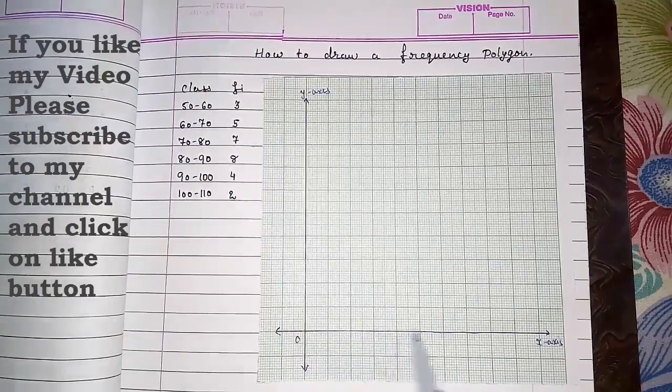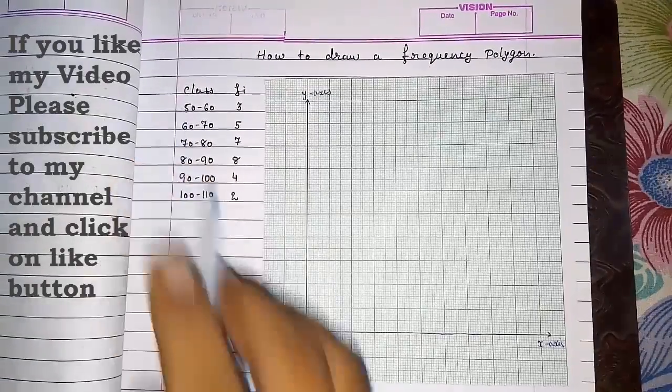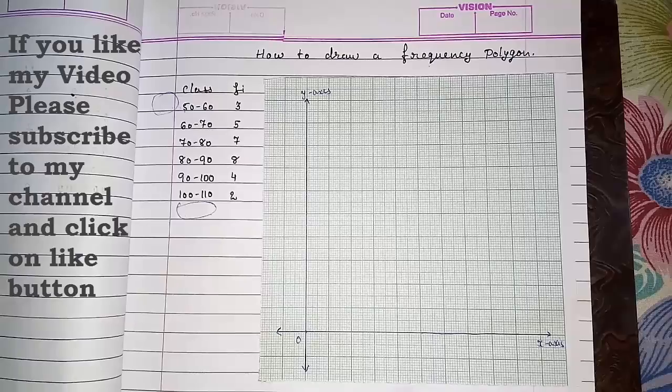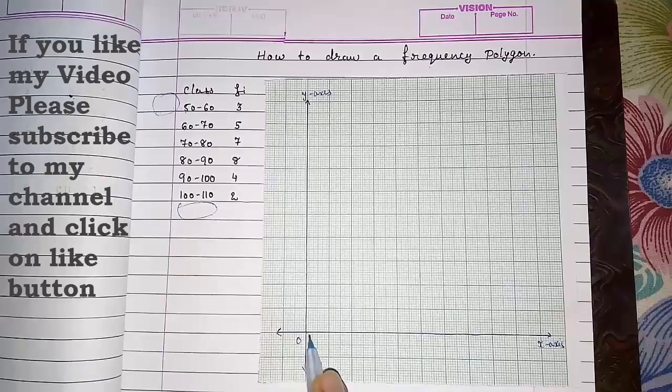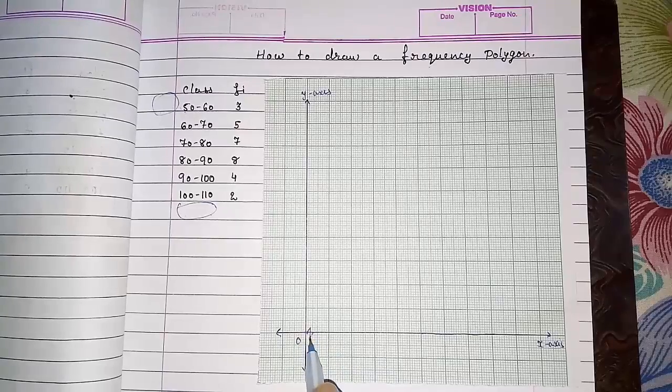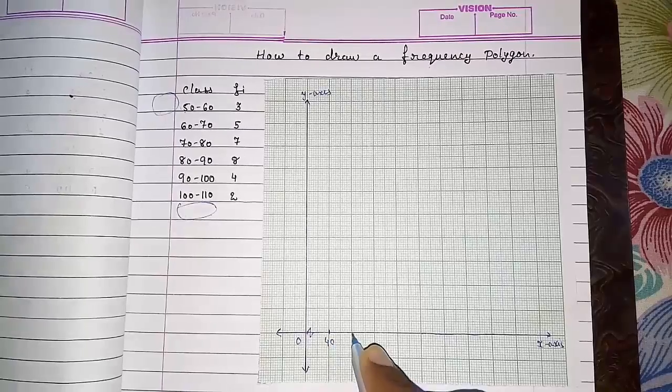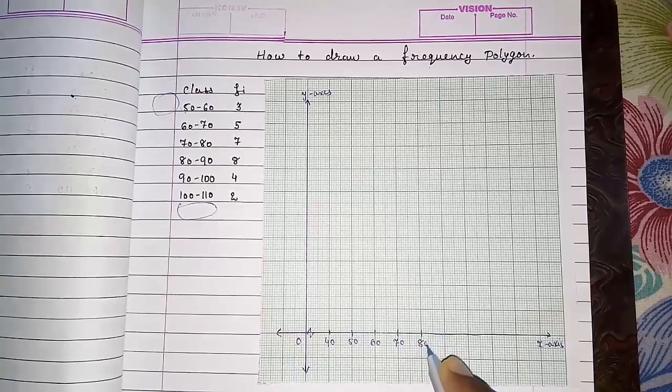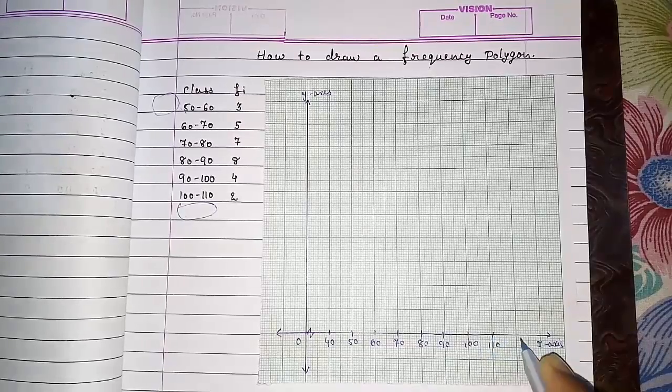Now one by one we have to represent this class here, but for frequency polygon first we have to extend one class in the front section and after this also we have to add one class. Why we are adding that I will tell you later. So here 50 to 60 was there. So first we will start with 40. From 0, first we have to make a zigzag sign or spring so that 10, 20, 30 will come inside this. Now we have to start with 40, 50, 60, 70, 80, 90, 100, 110, and this is 120.